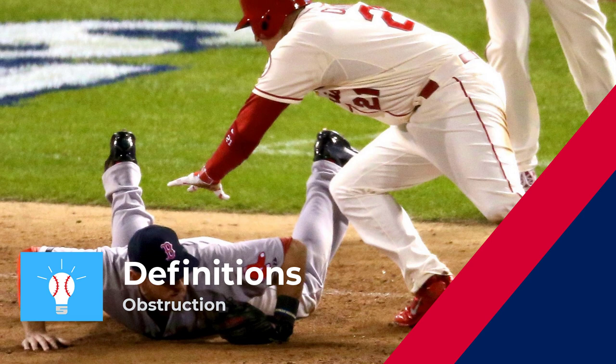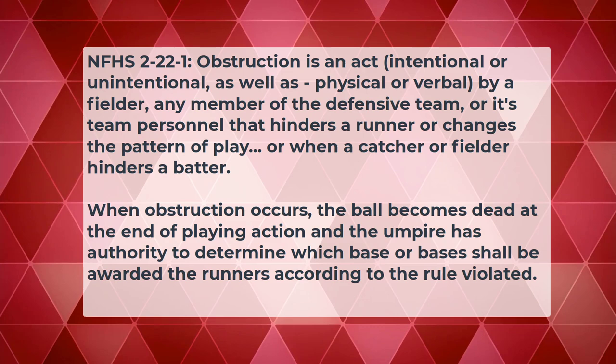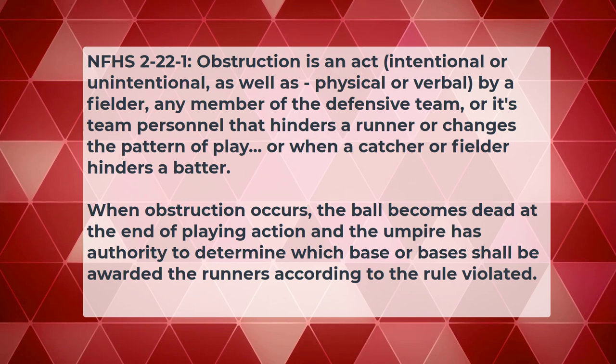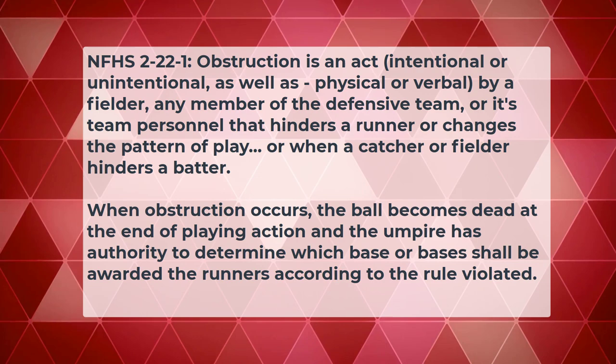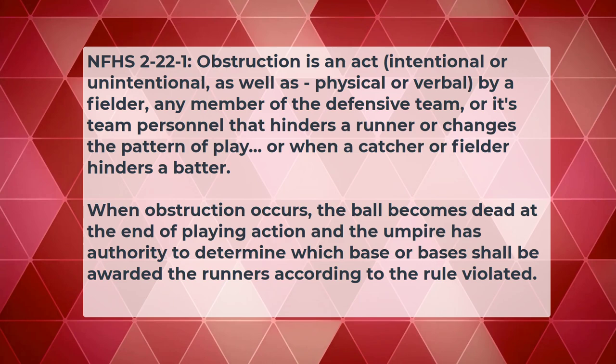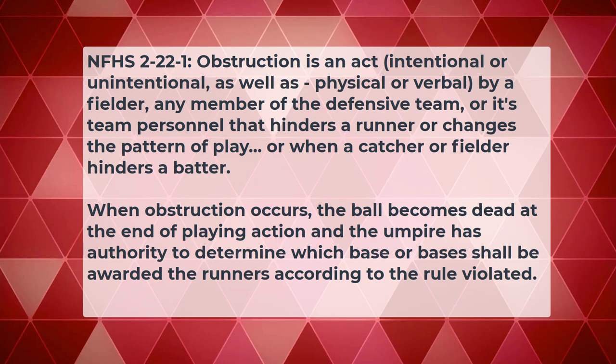Let's start by reviewing the definition of obstruction in NFHS baseball rules. Rule 2, Section 22, Article 1: Obstruction is an act, intentional or unintentional, as well as physical or verbal, by a fielder, any member of the defensive team or its team personnel that hinders a runner or changes the pattern of play, or when a catcher or fielder hinders a batter. When obstruction occurs, the ball becomes dead at the end of playing action, and the umpire has authority to determine which base or bases shall be awarded the runners according to the rule violated.